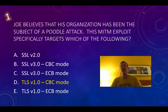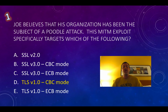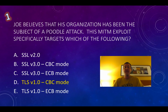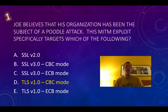Joe believes that his organization has been the subject of a Poodle attack. This MITM, or man-in-the-middle exploit, specifically targets which of the following? The Poodle attack is actually against TLS in CBC mode — CBC is cipher block chaining. The ECB is the electronic codebook. Essentially, this attack gets the connection to downgrade to an SSL connection, and SSL being more vulnerable is not a good thing. There's plenty of information on Wikipedia and Google, and we'll go ahead and move on to question number two.